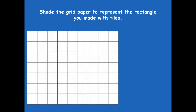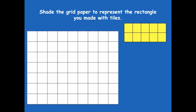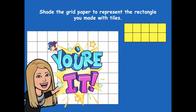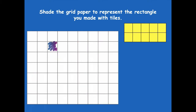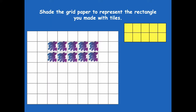Now you're going to take your grid paper and shade it to represent the rectangle you made with tiles — use your centimeter grid paper for this one. You have two rows of five in each row, so shade that in on your grid paper using your dry erase marker, or a pencil on paper. Go ahead and pause the video and shade that in. I'm going to draw in two rows with five in each row. Now those two match each other — I was able to use the tiling on the grid paper to help me find the area.